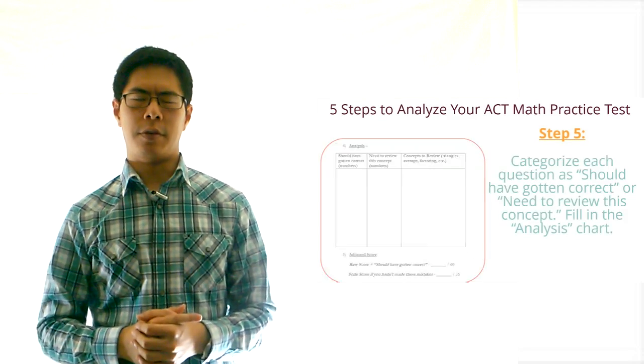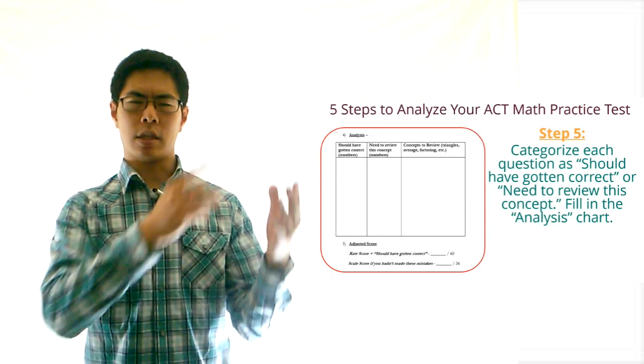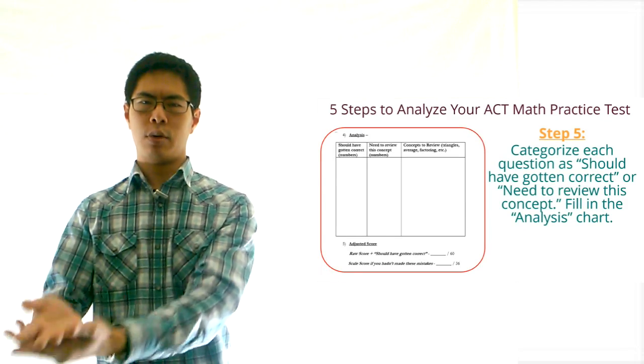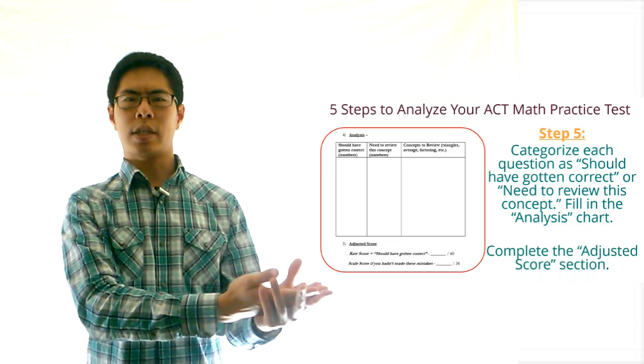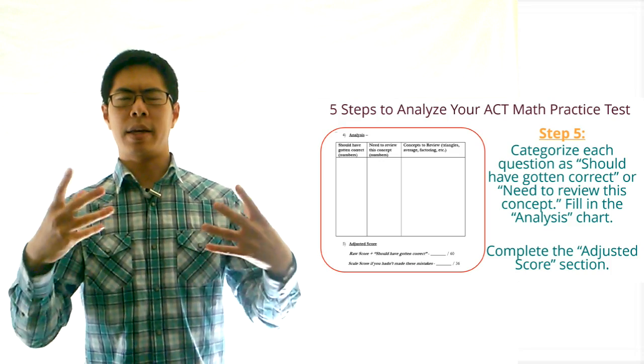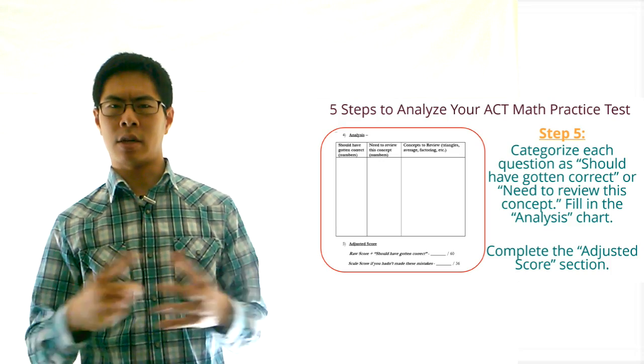Step 5. For each question that you missed, label it as should have gotten correct or need to review this concept. For the questions that you marked as should have gotten correct, add these questions to your raw score to see what your scale score would have been if you had not made these unnecessary mistakes.